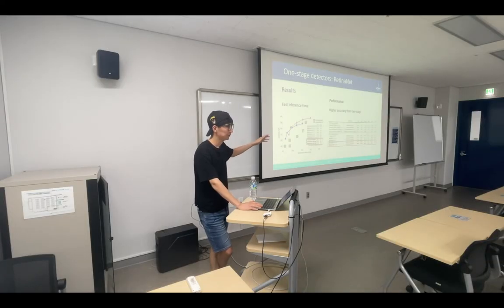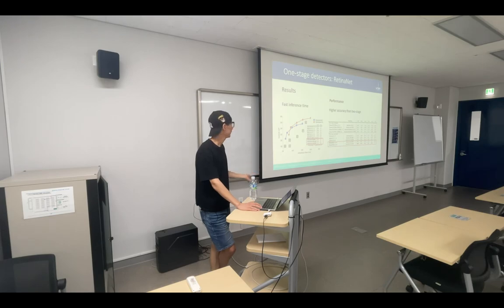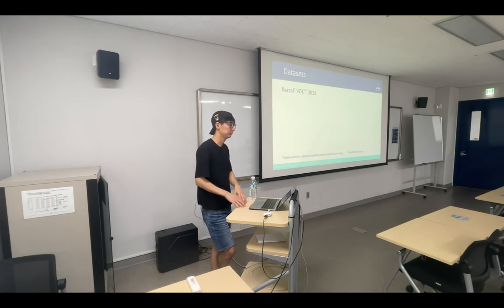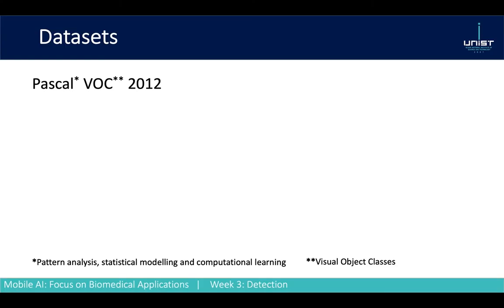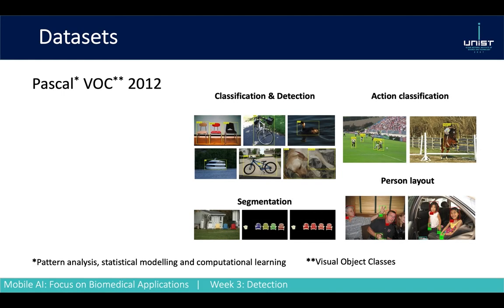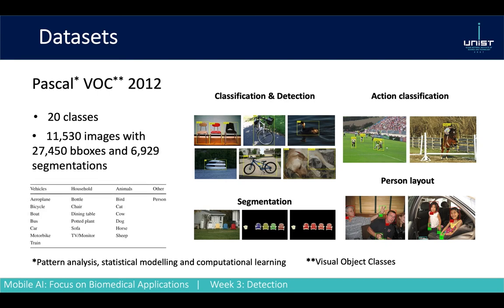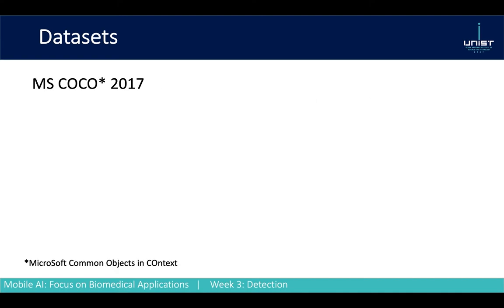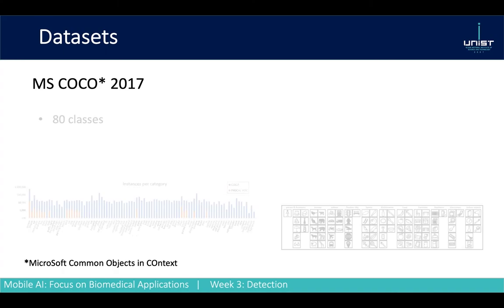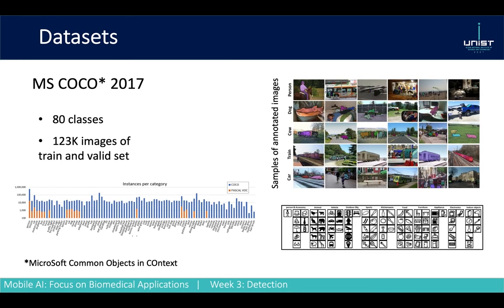Let's revisit evaluation and metrics. The commonly standardized benchmark dataset is Pascal VOC 2012 (originally from 2007), which can evaluate models on classification, segmentation, and other tasks. It has 20 classes and more than 10,000 images. The second common dataset is COCO — Microsoft Common Objects in Context — with 80 classes and more than 100,000 images.